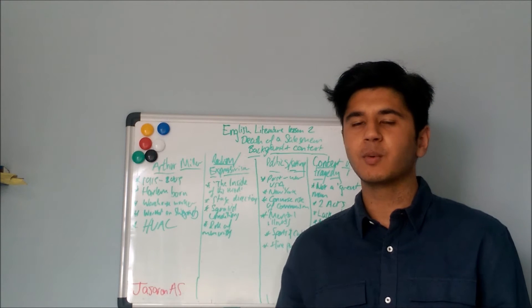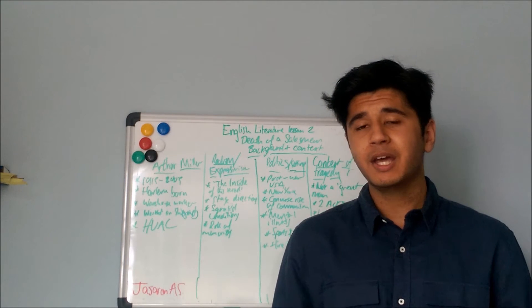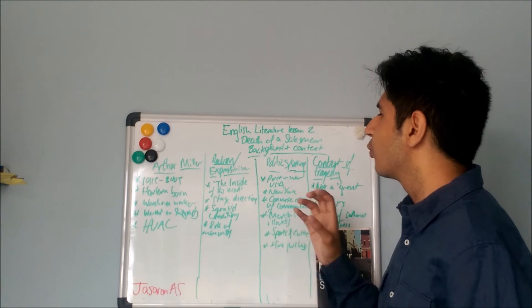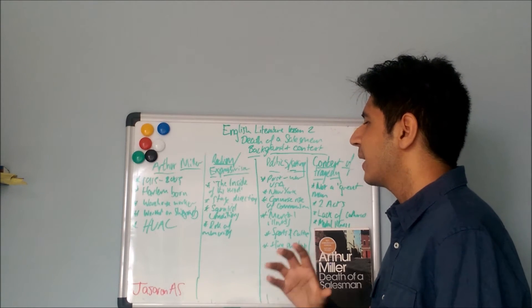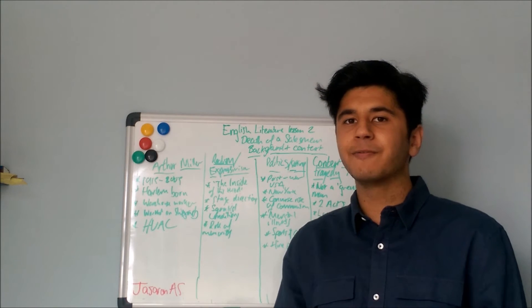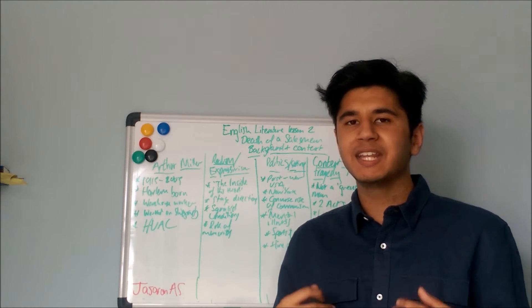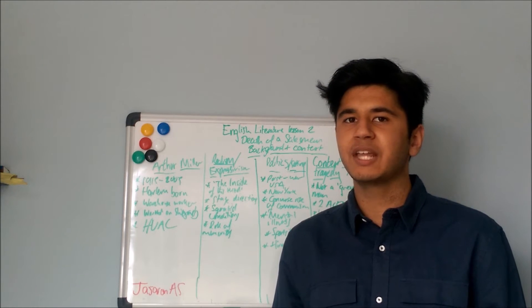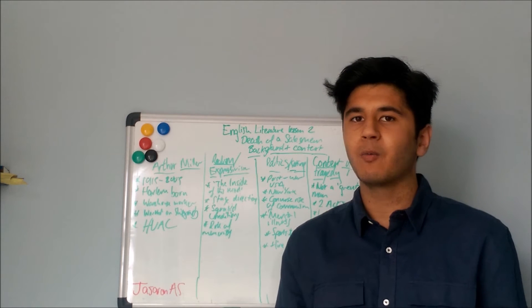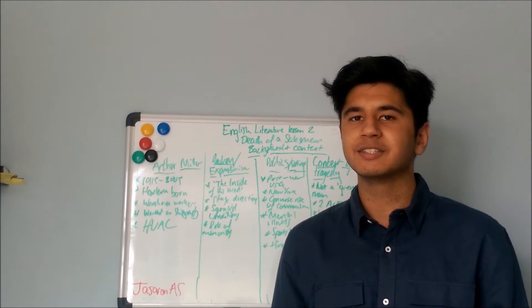It attempts to show us what Willy Loman is reminiscing about. It's key because in this play realism and expressivism work together. Although in some sense they are conflicting schools, in this play they work together to create a play which shows not only the reality of things but how Willy Loman, the main character, sees these things.